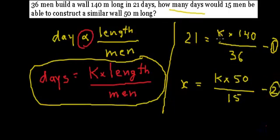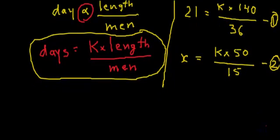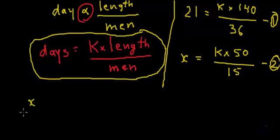In both equations we have k in the numerator. So if we divide equation number 2 by equation number 1, we will get rid of that k — we need not find the value of k. On the left-hand side we will have x divided by 21.